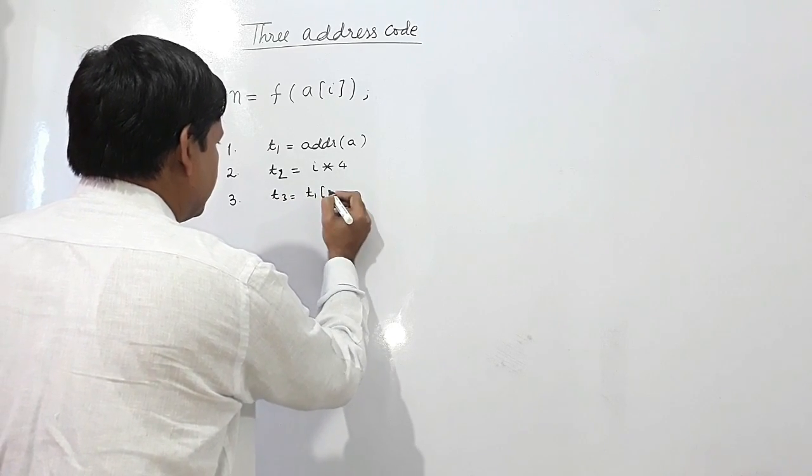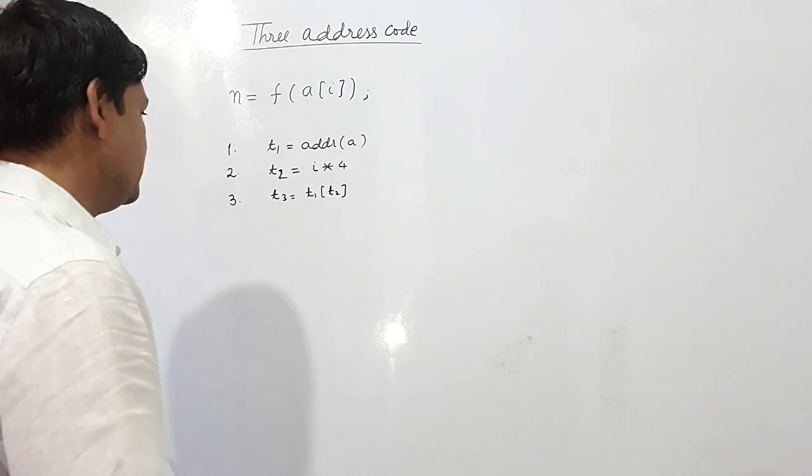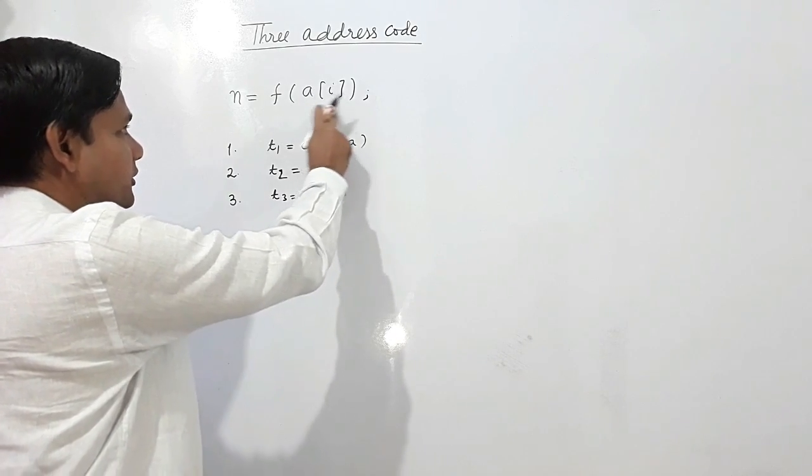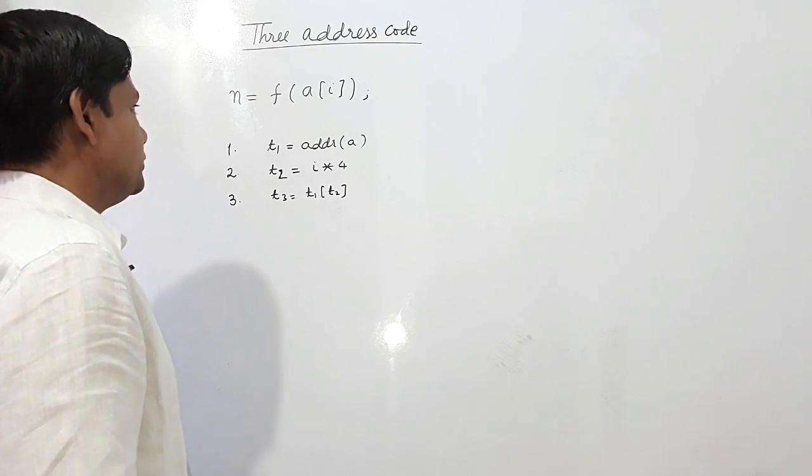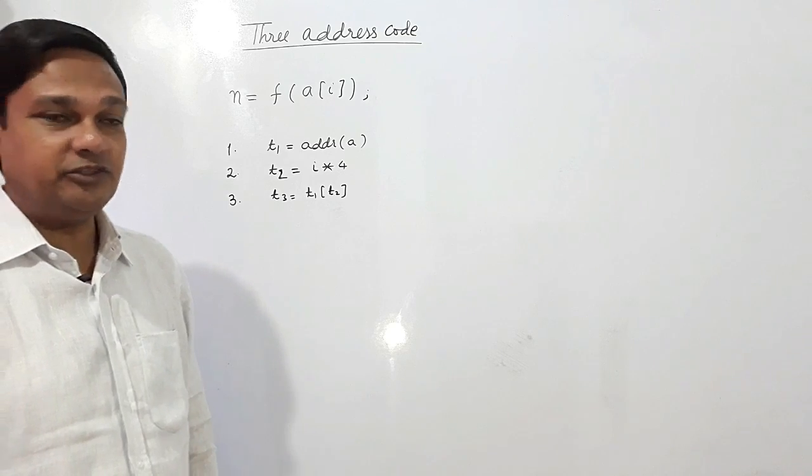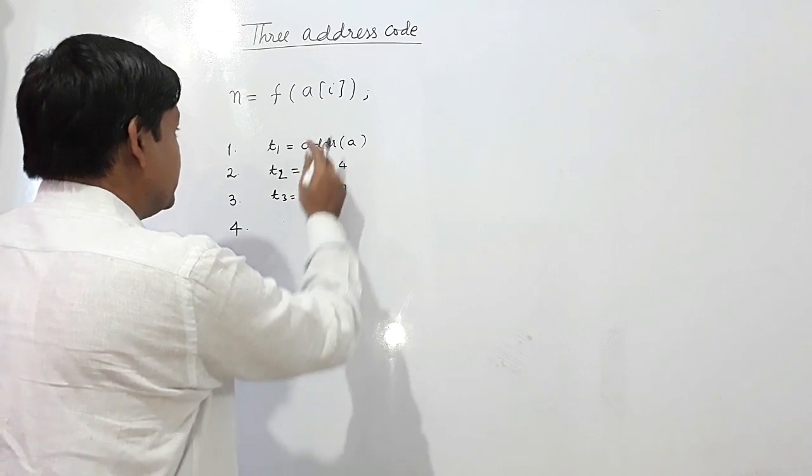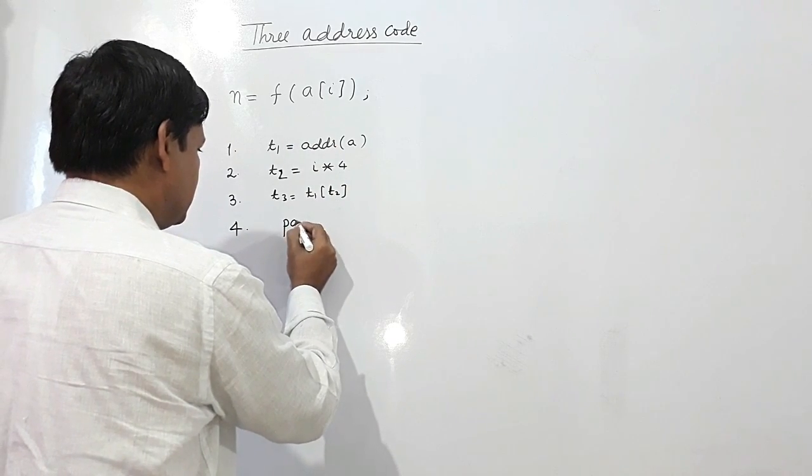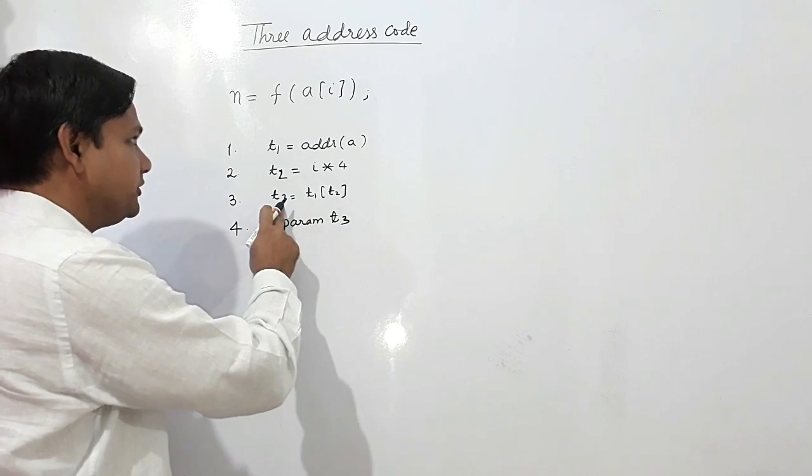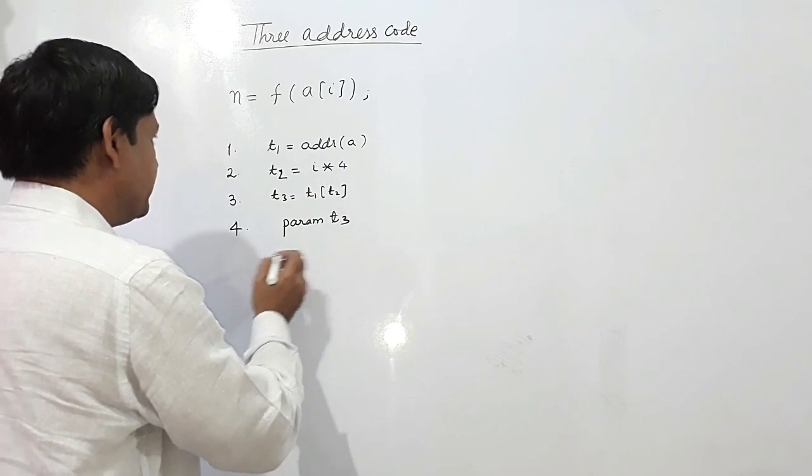t3 equals t1 plus t2. So this is the three address code for a[i]. Now what is this a[i]? This is a parameter, so I will write here parameter t3, because t3 is now a[i].